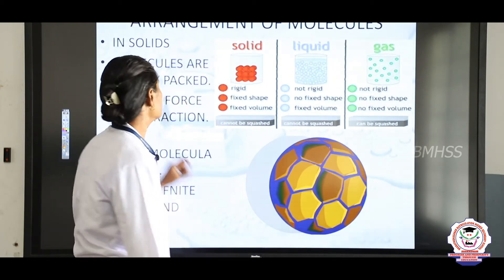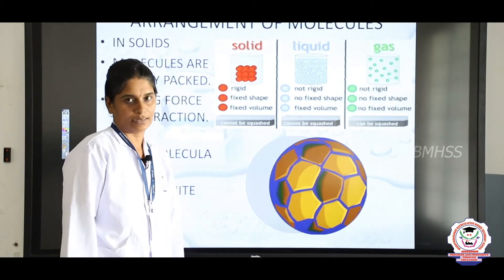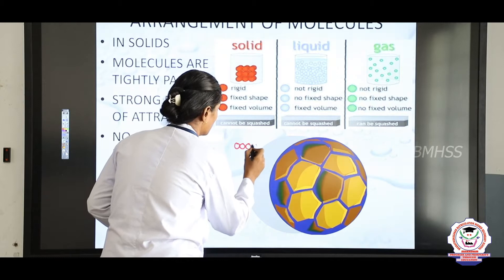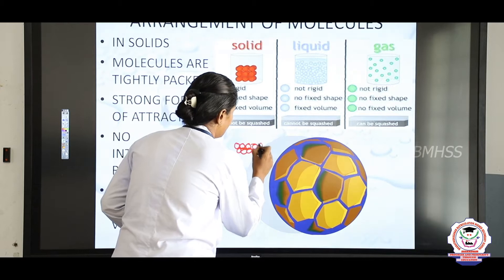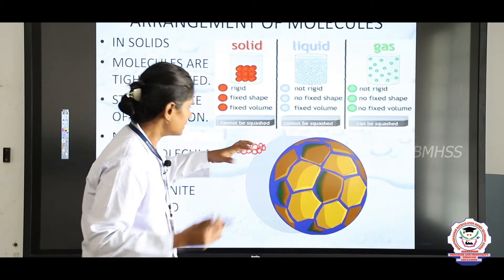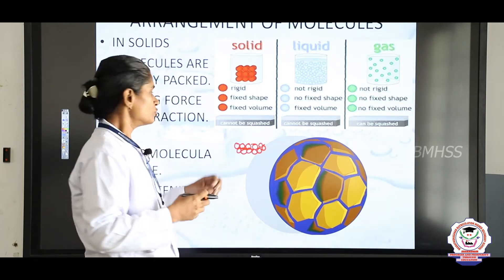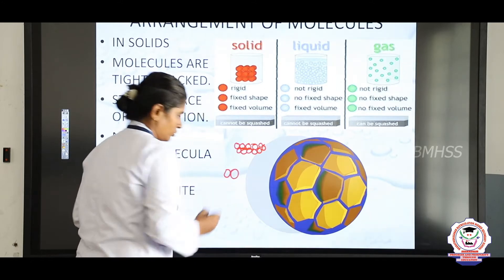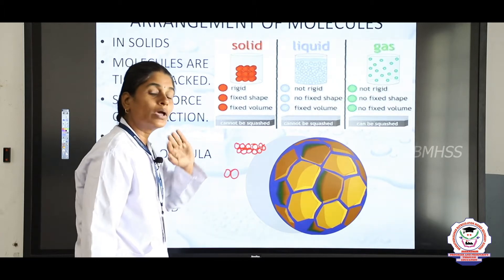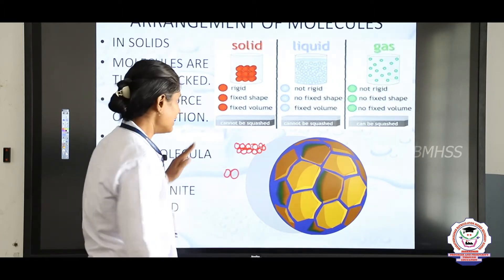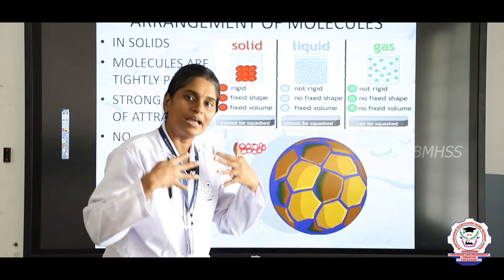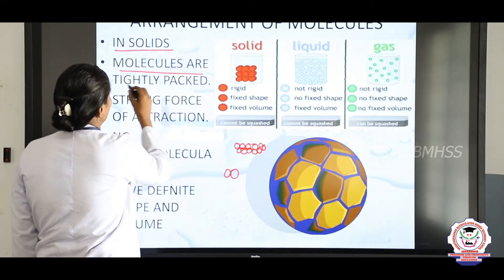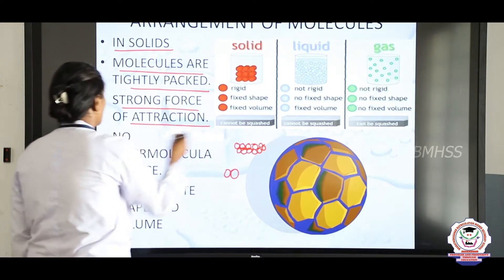First we will see in solids. In solids, the molecules are tightly packed — very closely packed. There is no intermolecular space. Intermolecular space is the space between the molecules. So, whether there is any space between the molecules? No. There is no intermolecular space in solids. As there is no intermolecular space, they have a strong force of attraction. So in solids: molecules are tightly packed, strong force of attraction, no intermolecular space.